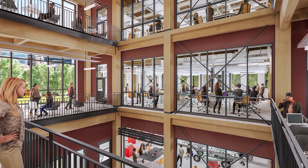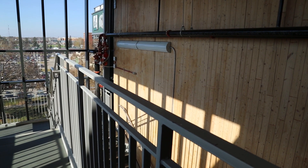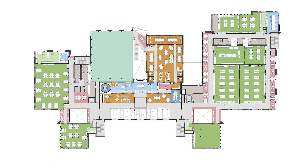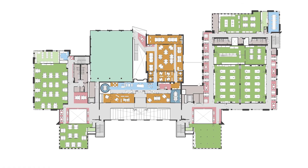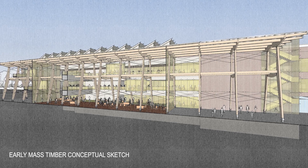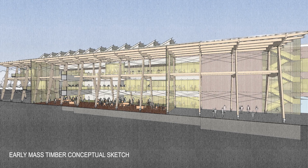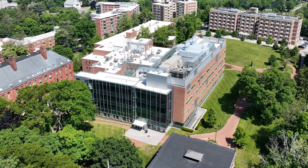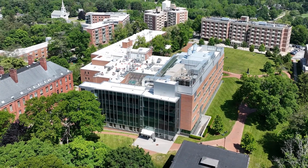Anytime we have higher occupant loads, we want to be closer to exits, have more exits, and have a shorter building — or provide more protection through construction type. If we want to go really tall or wide with a building, we need to make sure it's resilient to fire so that people have enough time to escape. Lab and life science buildings are just bigger than other spaces, to provide for both functionality and safety.